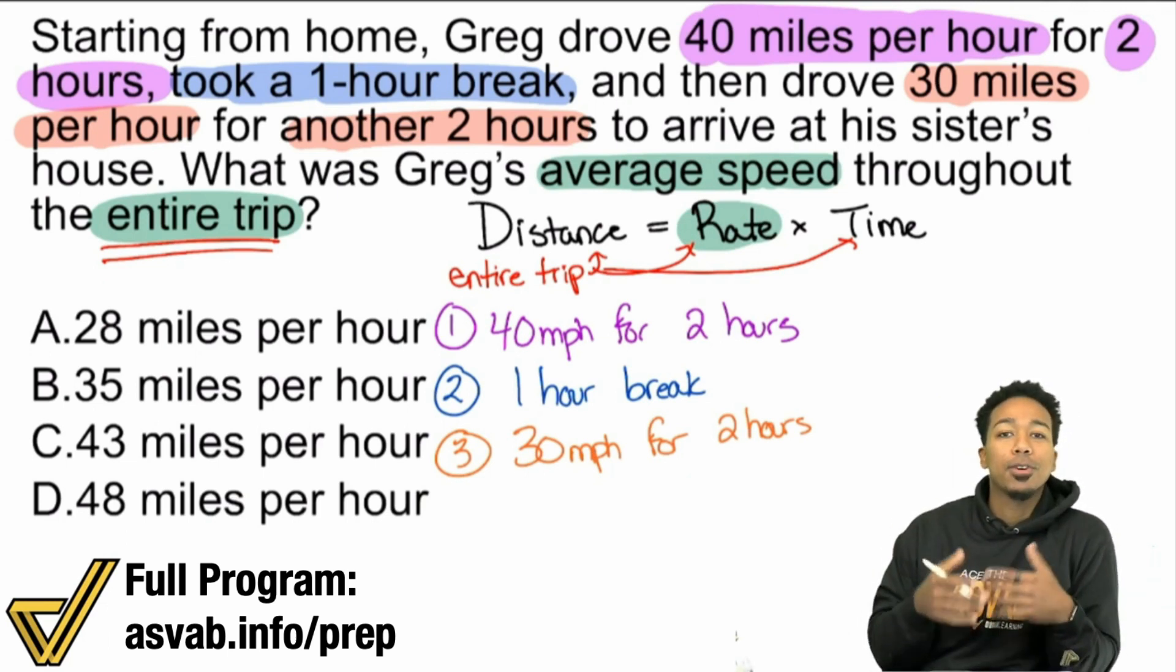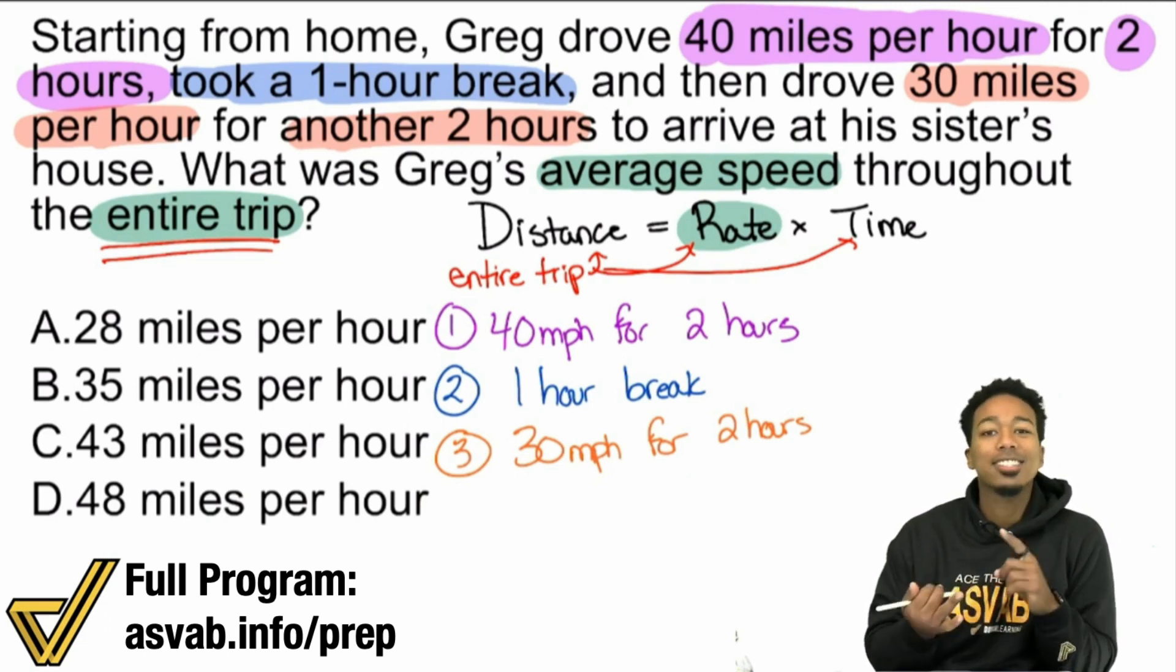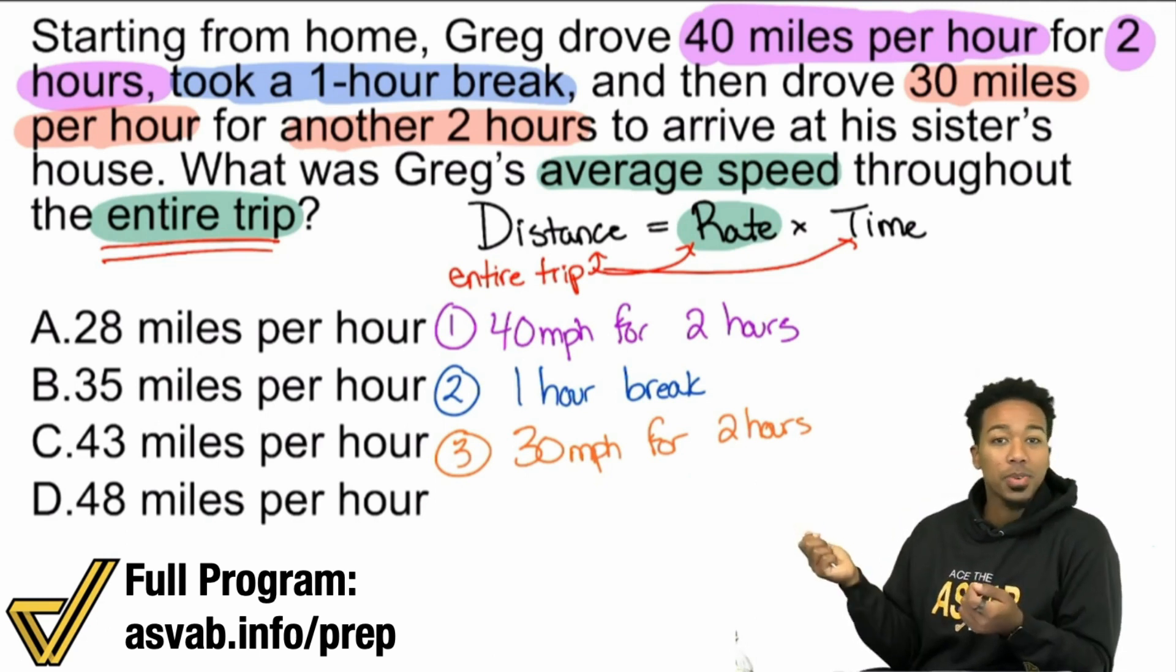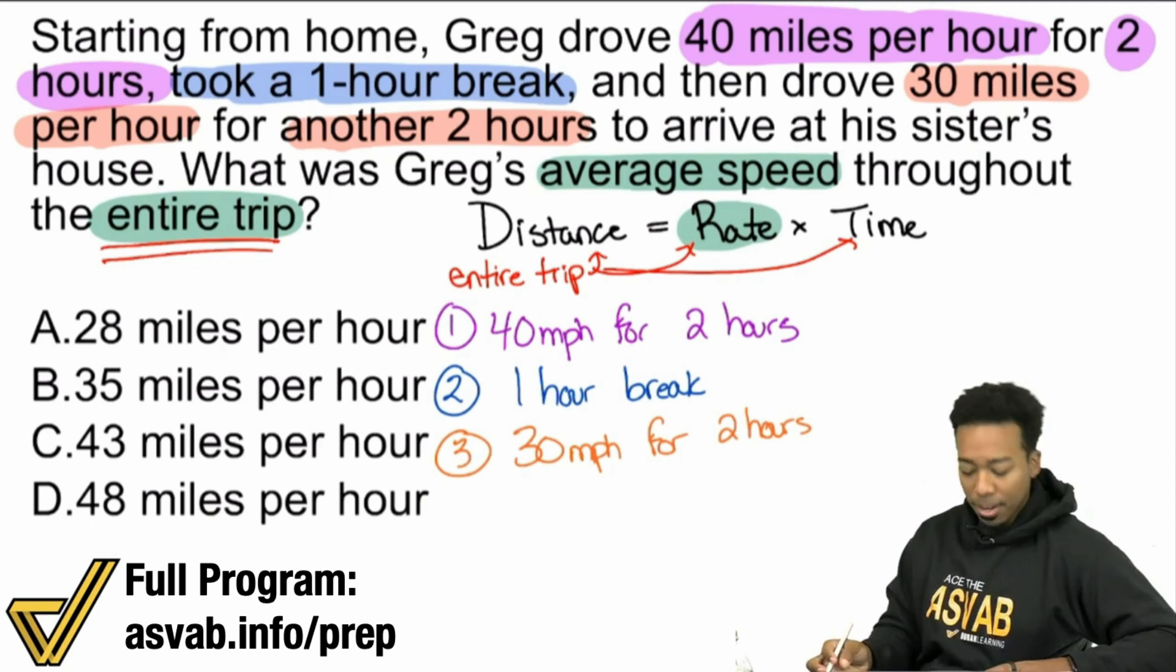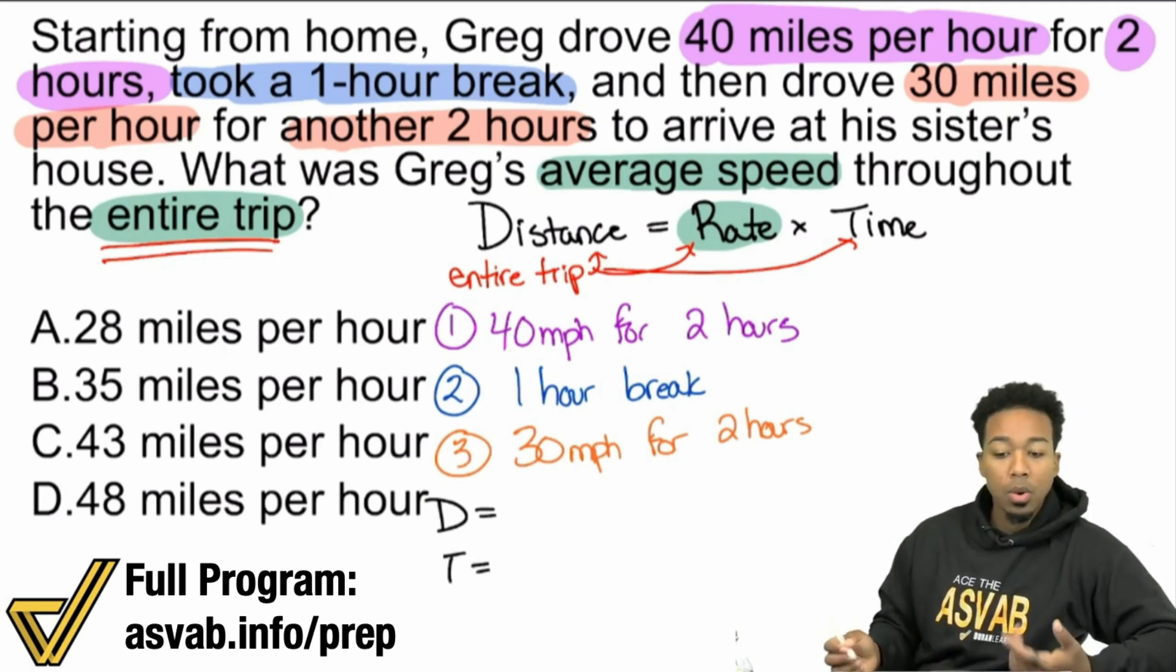Since we're looking for the rate for the whole trip, the distance we're going to plug in is for the whole trip. The time we're going to plug in has to represent the whole trip. It's just like proportions, compare the same things in the same way. Distance, rate, time represent the same scenario in the same way.